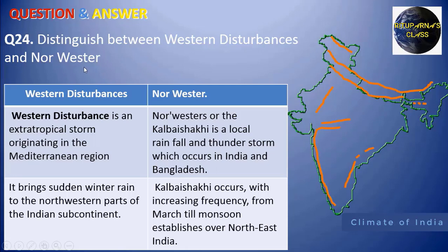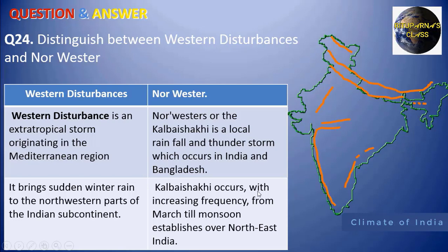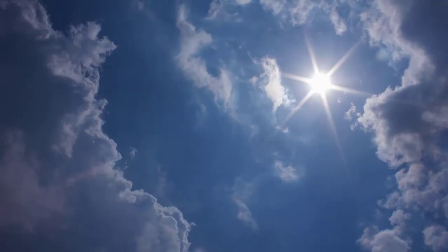Next: distinguish between western disturbances and Nor'westers (Kalbaisakhi). Western disturbances are extra-tropical storms — temperate cyclones — originating in the Mediterranean region. The Nor'wester or Kalbaisakhi is a local rainfall associated with thunderstorms, especially in West Bengal, Assam, and Bangladesh. Western disturbances bring sudden winter rain to the northwestern parts of the Indian subcontinent — Delhi, Punjab, and Haryana — while Kalbaisakhi occurs with increasing frequency from March until the monsoon in June, especially in the northeastern parts of India.